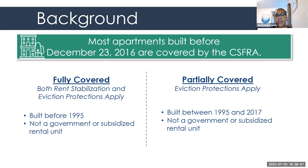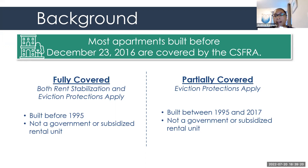Most buildings in Mountain View are covered by our local rent stabilization law, because they were built before the law went into effect, which was on December 23rd, 2016. However, there are two different types of covered units in the city. We have fully covered units and partially covered units. Our fully covered units have to abide by both the rent increase limits and the eviction protections, whereas our partially covered units only have to follow the rules for eviction protections. The difference is that our fully covered units were built before 1995, and our partially covered units are built between 1995 and 2017.